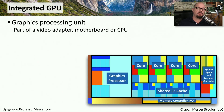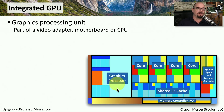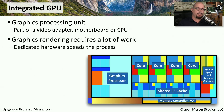On older computers, we used separate video cards to provide the video display we see on our screens. But as our technologies have improved, we've been able to take a lot of the video technology and integrate it directly into our processors. On many computers, you'll find this graphics processor is built into the CPU, so you don't necessarily need a completely separate video card. However, if you're doing video editing, gaming, or need higher-end graphics, you still might want a separate independent graphics card. But if you're simply browsing the internet, watching streaming video, or checking email, the integrated graphics processor of your CPU might be the best choice.